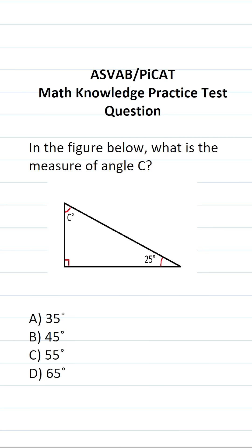This math knowledge practice test question for the ASVAB and PyCat says in the figure below, what is the measure of angle C? You can see that we have a right triangle. One of the angles is 25 degrees and we want to know the measure of angle C.